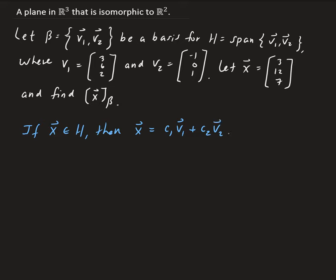So from here we can go ahead and write this out. So X will be equal to C₁ times V₁, which is [3, 6, 2], plus C₂ times V₂, which is [-1, 0, 1].